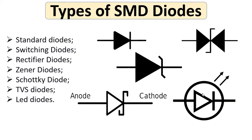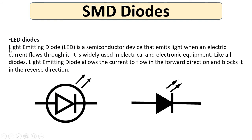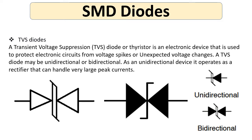Let's begin with the LED diodes. The light emitting diode (LED) is a semiconductor device that emits light when an electric current flows through it. It is widely used in electrical and electronic equipment. Like all diodes, the LED allows current to flow in the forward direction and blocks it in the reverse direction.